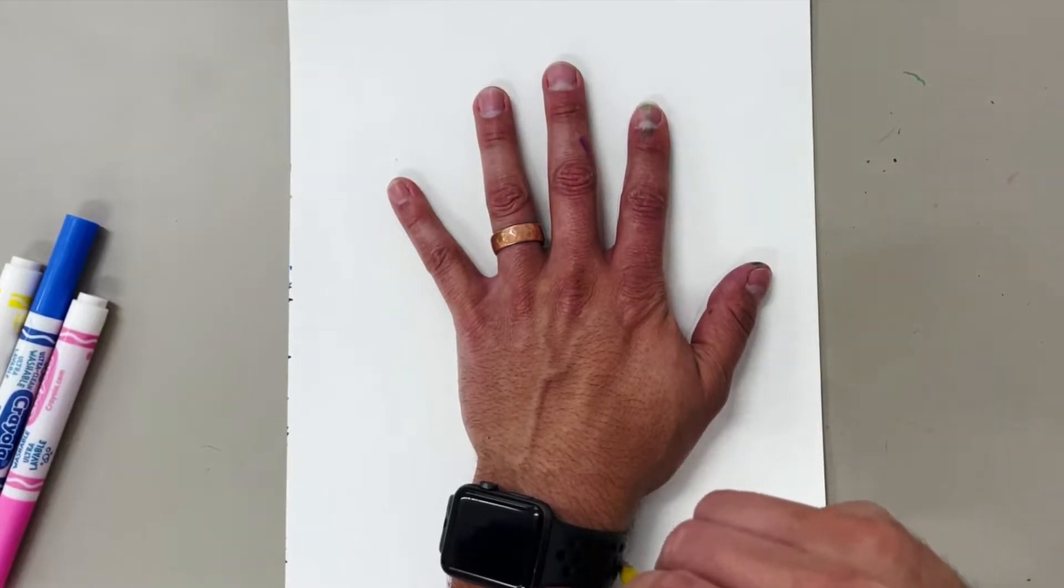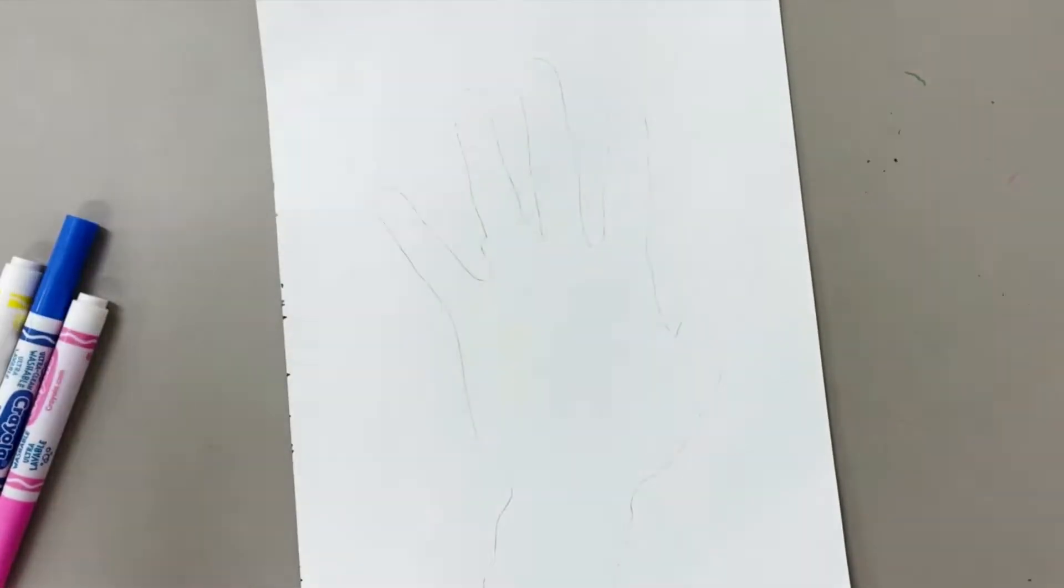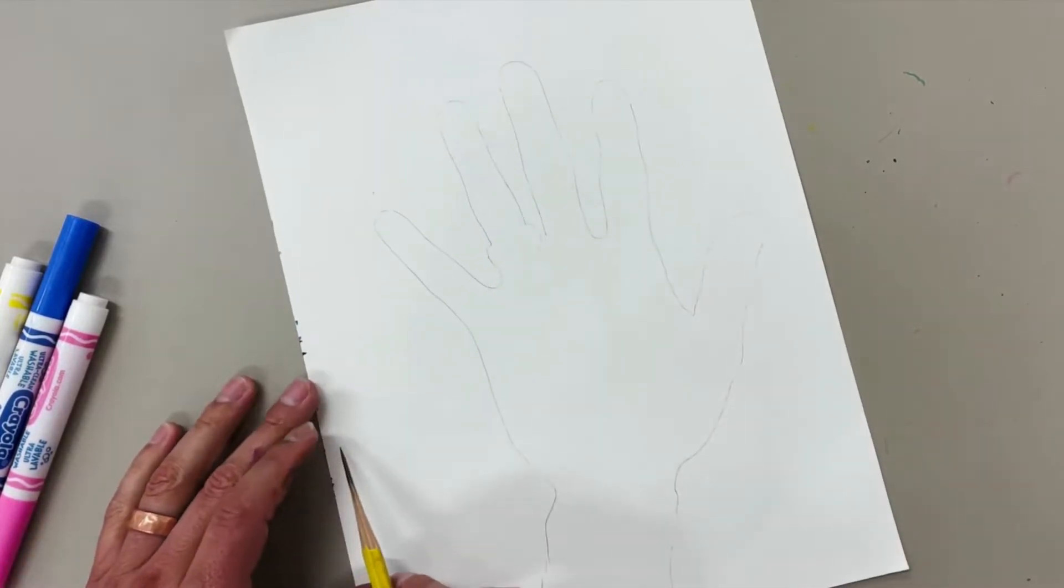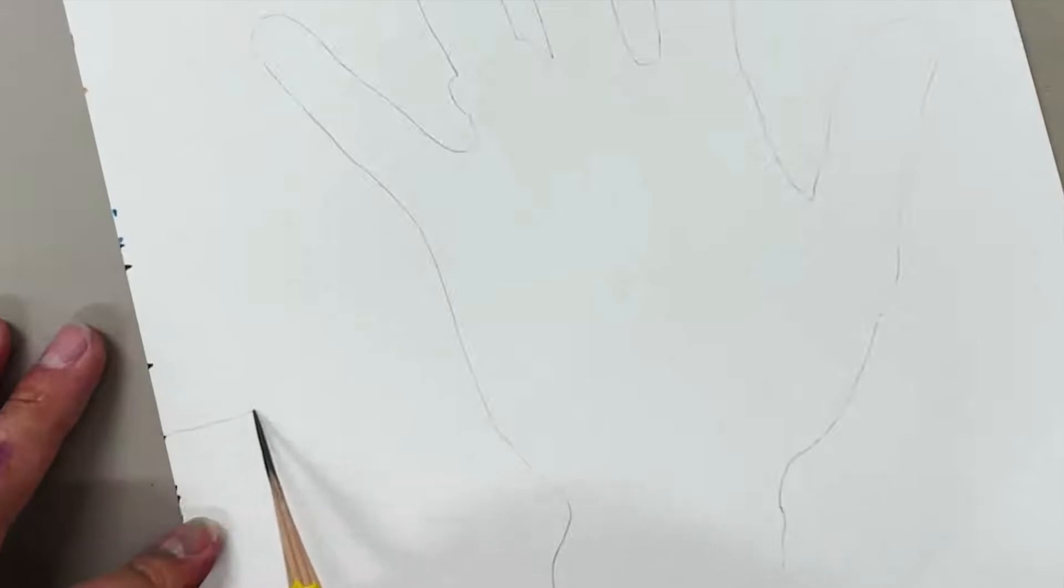After you've got your tracing done, now it's time to start with your pencil to trace the 3D lines. Now I'm going to start right in the center. I'm going to start from the left side of the paper and I'm going to draw a horizontal line over to my hand and stop.